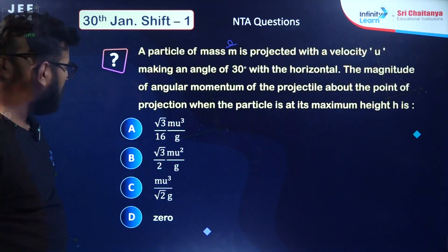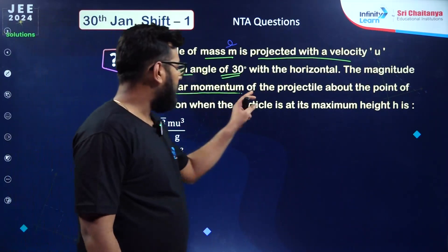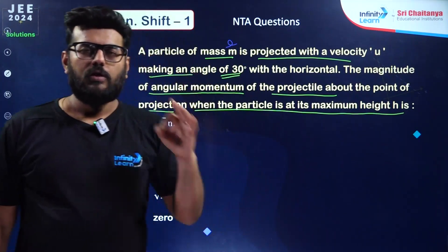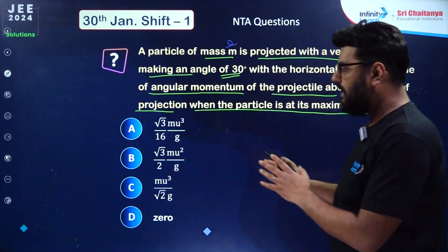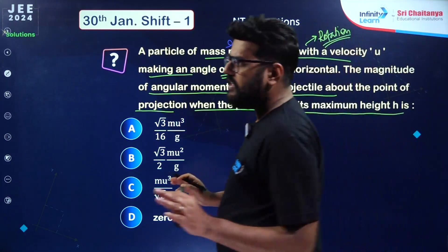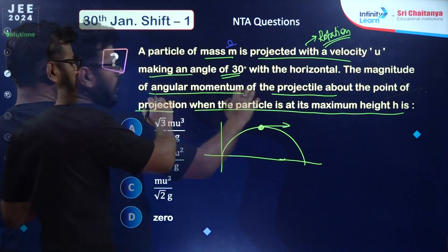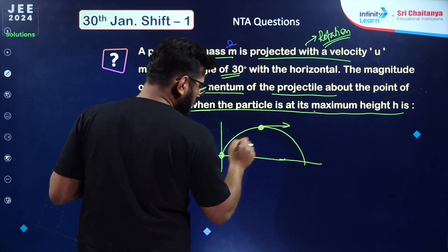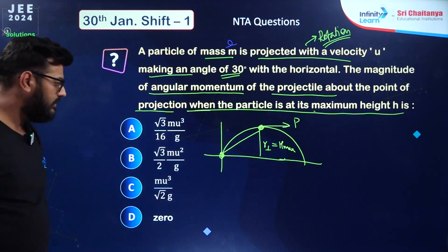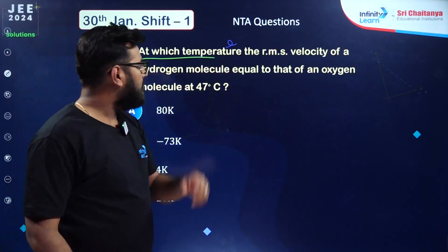From rotational motion: a particle of mass m projected with velocity u making 30 degrees with horizontal. The magnitude of angular momentum about the point of projection when the particle is at maximum height is asked. This is a very standard case — r-perpendicular will be h_max and momentum at max height is m·u·cos30. r-perpendicular times momentum gives the angular momentum. The correct answer is option number A.